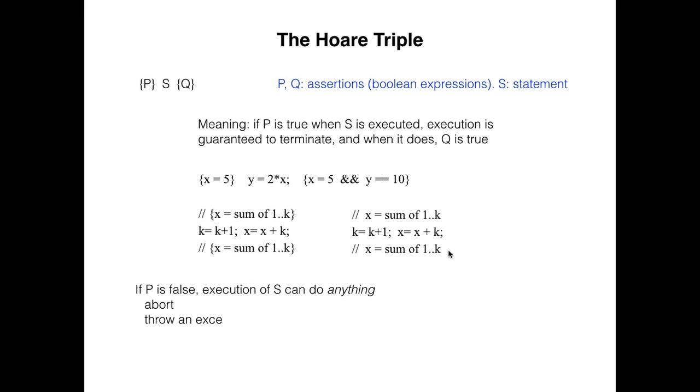If precondition p is false, then the Hoare triple guarantees nothing about execution, and execution of s can do anything. It can get into an infinite loop. It can stop immediately with no guarantees about what state it is in. It can abort, perhaps by dividing by zero. That's because of its meaning. Its meaning is, if s is executed in a state in which p is true, then dot dot dot. That sentence says nothing about what will happen if p is not true.